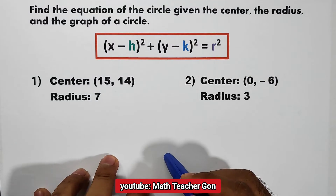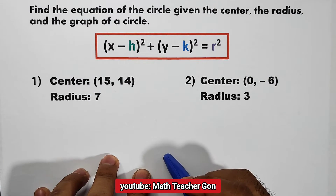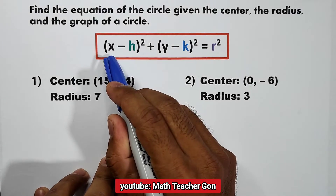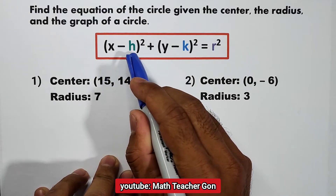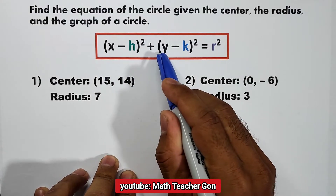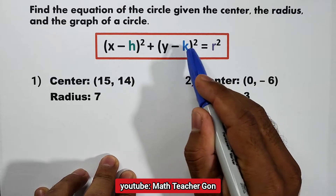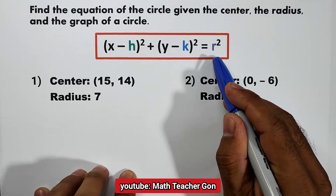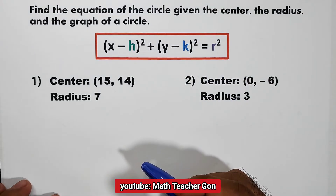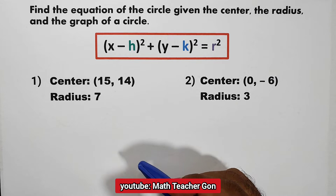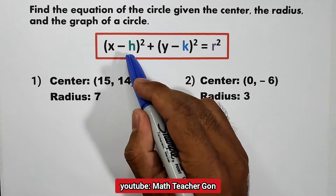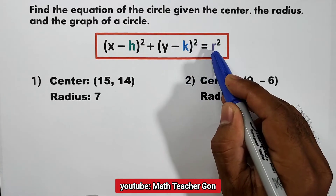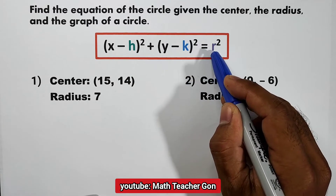The standard form or the center-radius form of a circle is: the quantity of (x minus h) squared plus (y minus k) squared is equal to r squared, where h and k is the center and r is the radius.